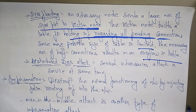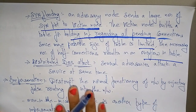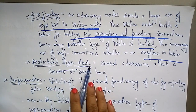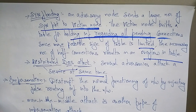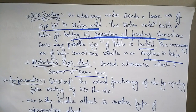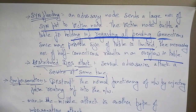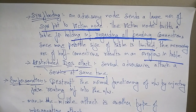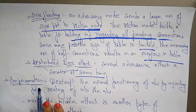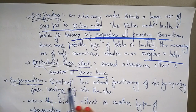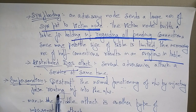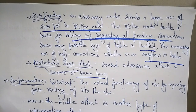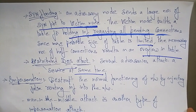Another denial of service type is Distributed Denial of Service (DDoS), where several adversaries attack a service at the same time. Another multi-layer attack is impersonation, which disrupts the normal functionality of a network by injecting false routing information. The man-in-the-middle attack is also a type of impersonation attack that deviates the network traffic.